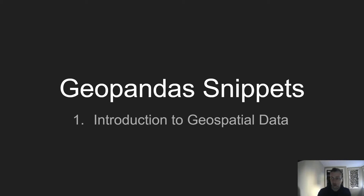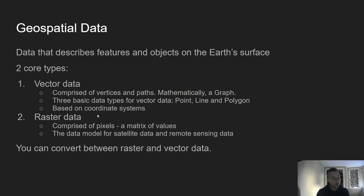This is a short, non-practical quick introduction to geospatial data. What is geospatial data? It's data that describes features and objects on the earth's surface. It's not constrained to earth — you can do spatial analysis on any body, another planet, the moon, any satellite — but 99% of the time you're going to be working with things on the earth's surface.